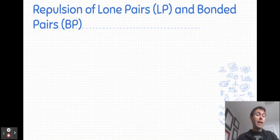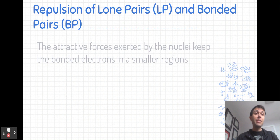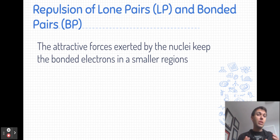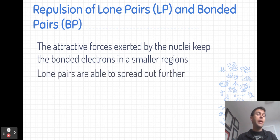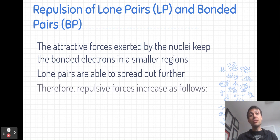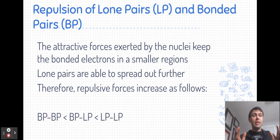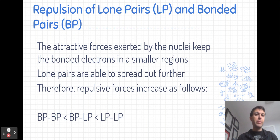We group these pairs of electrons into two different categories because they cause differing amounts of repulsion. The bonded pairs are attracted to two nuclei, so they're fixed in place much more tightly and into a smaller region. Whereas lone pairs of electrons are able to spread out and occupy much more space. As a result, lone pairs cause the most amount of repulsion — they repel each other much more than two bonded pairs, and a lone pair–bonded pair interaction falls somewhere in the middle.